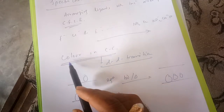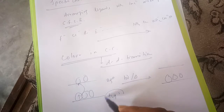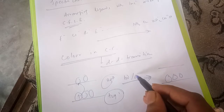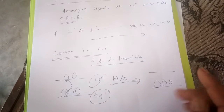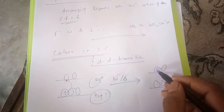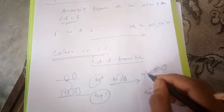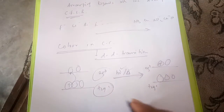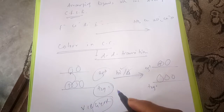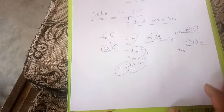We are taking color in d-d transition. If the electron configuration is t2g¹ eg⁰, and the energy hν equals Δo, the electron gains energy and jumps to the higher level, giving t2g⁰ eg¹. Due to this transition, if the complex absorbs a particular color, the observed color will be violet or blue.